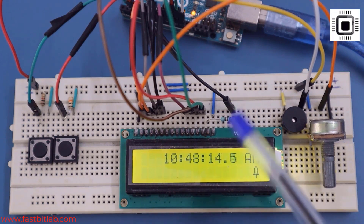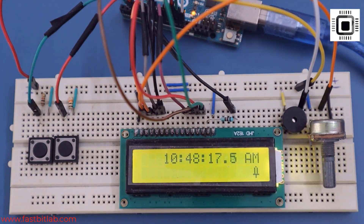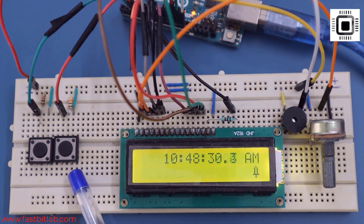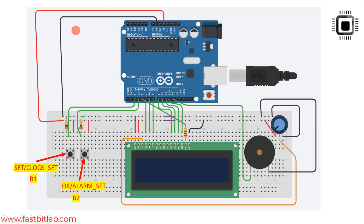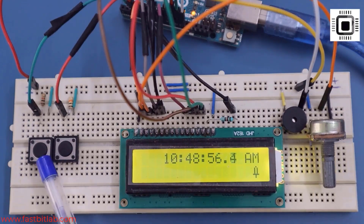The connections between the LCD and the Arduino board are exactly the same as before. There is an optional buzzer, a potentiometer to set the contrast for the LCD, and two buttons on the button pad. The first button is called the set or clock set button, and the second button is the OK/alarm set button — these are multifunctional buttons.